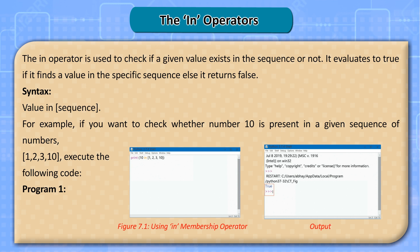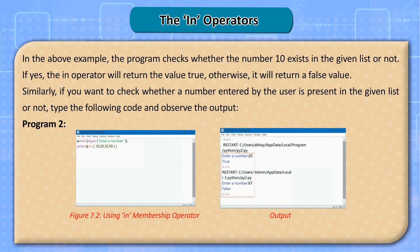Execute the following code — Program 1. In the above example, the program checks whether the number 10 exists in the given list or not. If yes, the 'in' operator will return the value true, otherwise it will return a false value. Similarly, if you want to check whether a number entered by the user is present in the given list or not, type the following code and observe the output — Program 2.